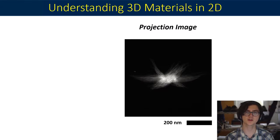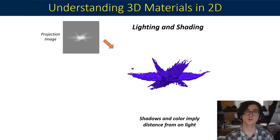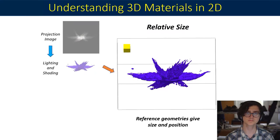However, once we have reconstructed the 3D dataset from electron tomography, we can present the data with visual cues that exhibit the inherent depth of the object. These so-called monocular cues describe visual information that can be appreciated by a single eye to understand our 3D world. To start, we have shading and lighting. The nanoparticle's features are now easily compared because we have color and brightness, implying some distance from a virtual light source. Next, relative size is another common monocular cue, which is invoked through easily digestible geometries that provide scale and orientation.